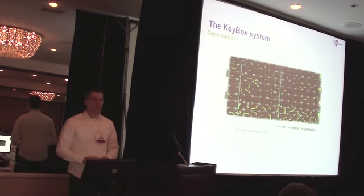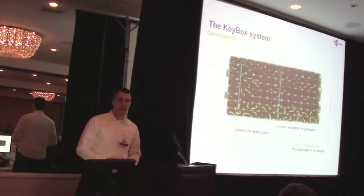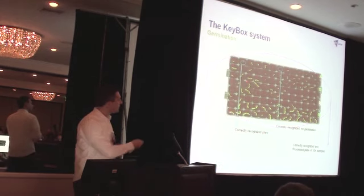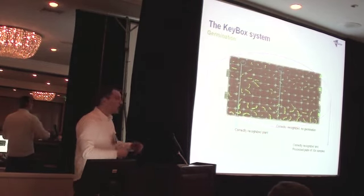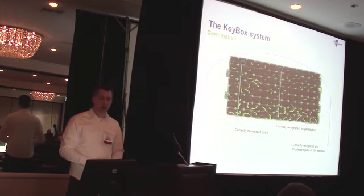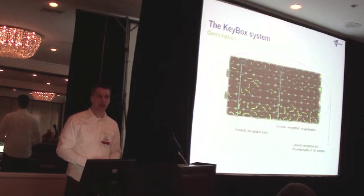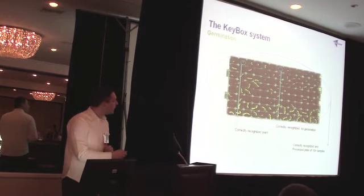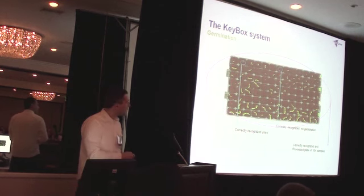And then, out to a different field, germination. Germination is often also now tested manually. So, you have this kind of tray where you sow your plants and then you score the percentage of germination, usually by eye at this moment still. Now, we have developed an algorithm for that, to further automate the germination and the germination percentage scoring.